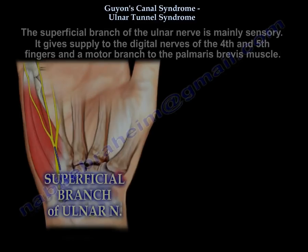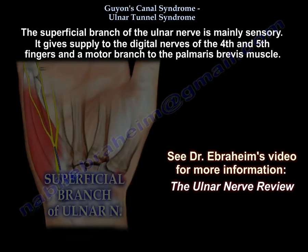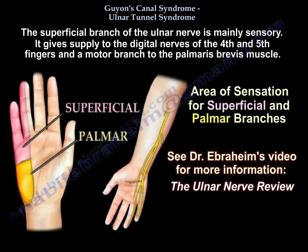The superficial branch of the ulnar nerve is mainly sensory. It gives supply to the digital nerves of the fourth and fifth fingers, and the motor branch to the palmaris brevis muscle. Here is the area of sensation for the superficial and palmar branches, and it is important to know the difference between these two areas of sensation.